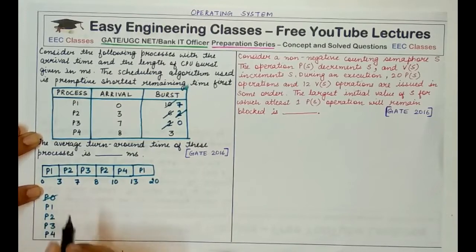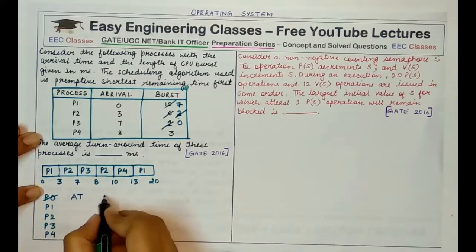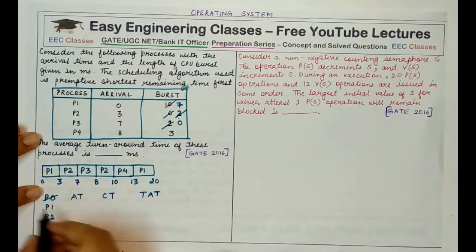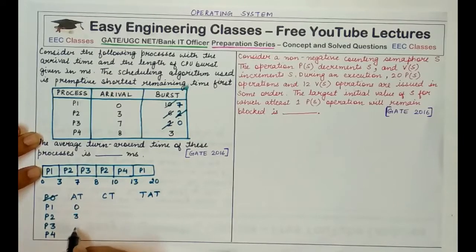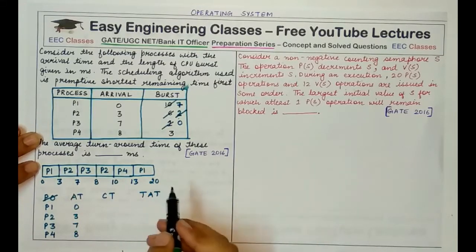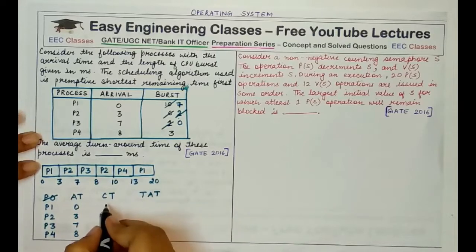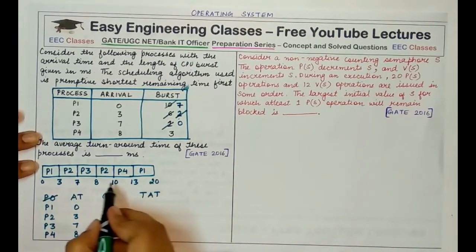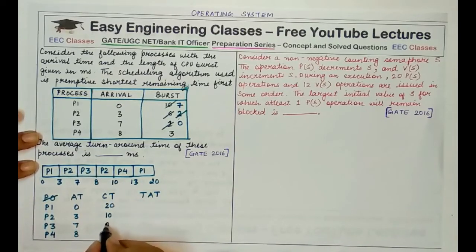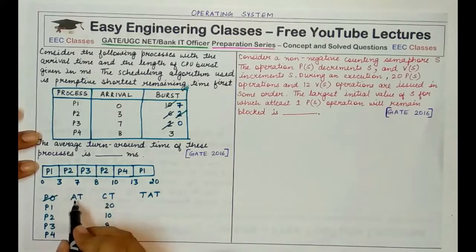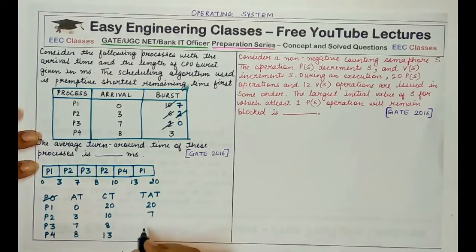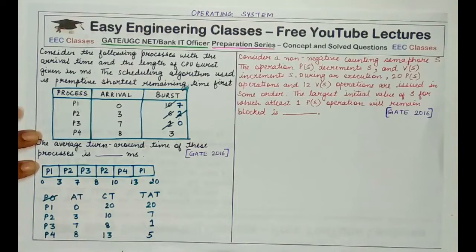Writing down the table: arrival times for P1, P2, P3, P4 are 0, 3, 7, and 8 respectively. Reading completion times from the Gantt chart right to left: P1 completes at 20, P2 at 10, P3 at 8, and P4 at 13. Turnaround time equals completion time minus arrival time: 20−0=20, 10−3=7, 8−7=1, 13−8=5.